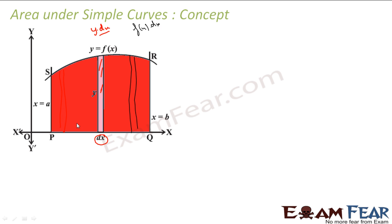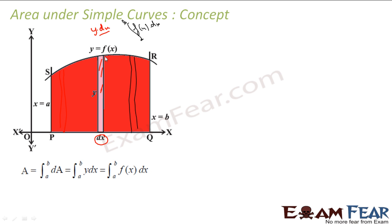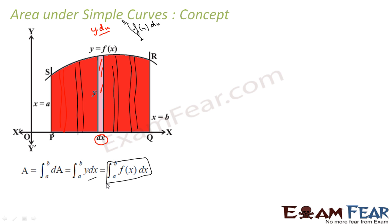Now you have so many strips. You keep changing the value of x from a to b and you get so many strips. So you do integration from a to b. The area is nothing but the integration of dA, where dA is y·dx — a rectangle whose length is y and width is dx, and y is f(x). You want to find the complete area, so you take all the small rectangles from here to here, add them all, with x varying from a to b. That gives you the area: ∫f(x)dx from a to b.